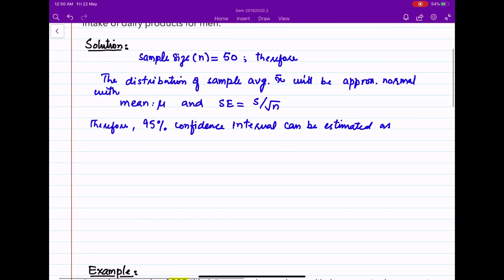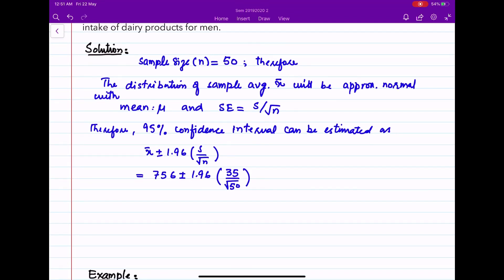We know the formula. The formula is x bar or sample average plus minus 1.96. 1.96 is the value of z within which 95% of the data exists. So by putting the value of sample average 756 plus minus 1.96, and the value of s is 35 and sample size is 50, we get the value which is